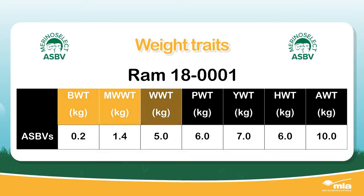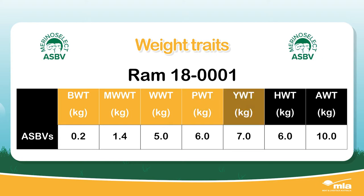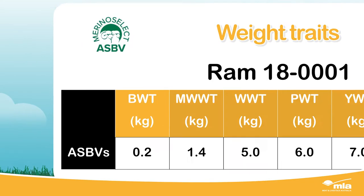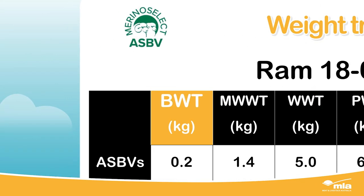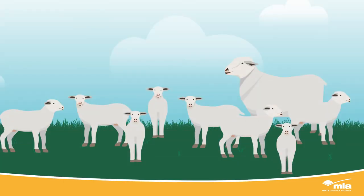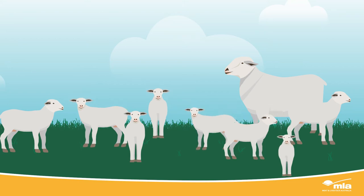The available weight traits are reported from birth to adult. BWT is birth weight and is measured in kilograms. Birth weight is a trait where an optimum is desirable. Some producers need lambs to be smaller at birth to prevent dystocia, so select for a lower birth weight value.